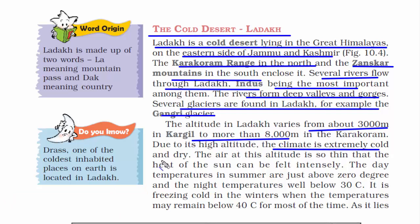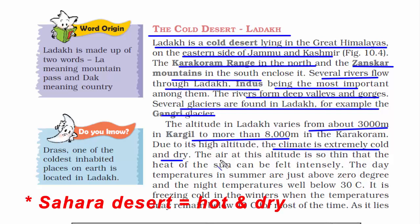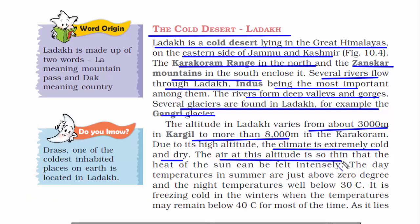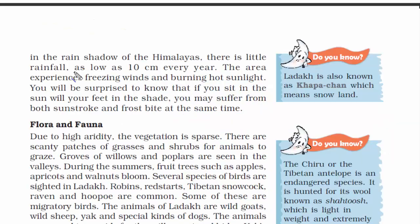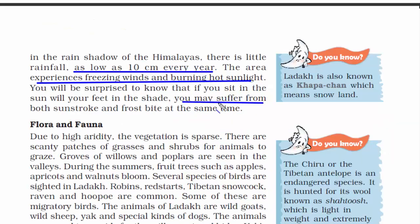Due to its high altitude, the climate is extremely cold and dry — unlike the Sahara Desert, which is hot and dry. The air at this altitude is very thin because of the lack of oxygen, but the heat of the sun can be felt intensely. This shows some characteristics of a desert — it's just a cold one. Rainfall is as low as 10 cm every year, and people suffer from both sunstroke and frostbite at the same time due to the intense climate.